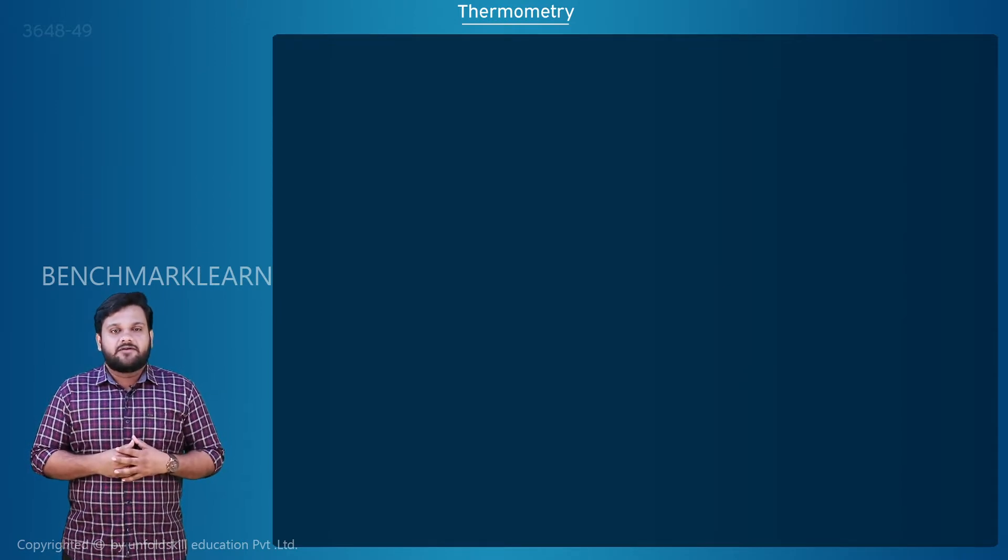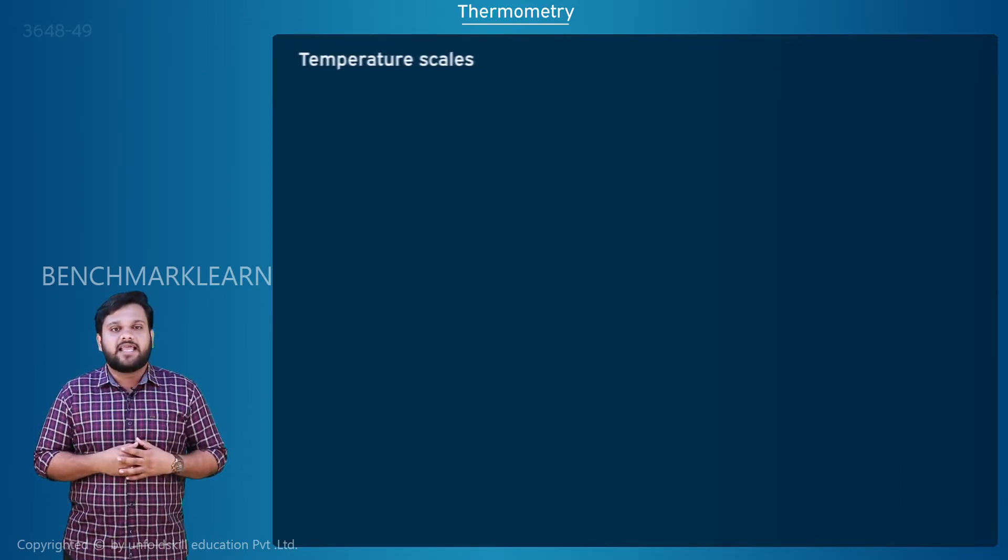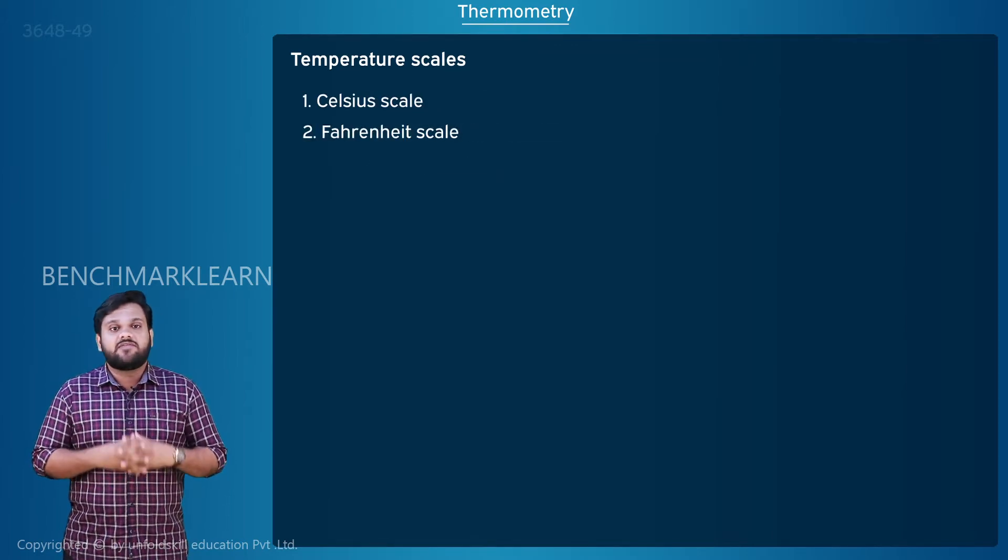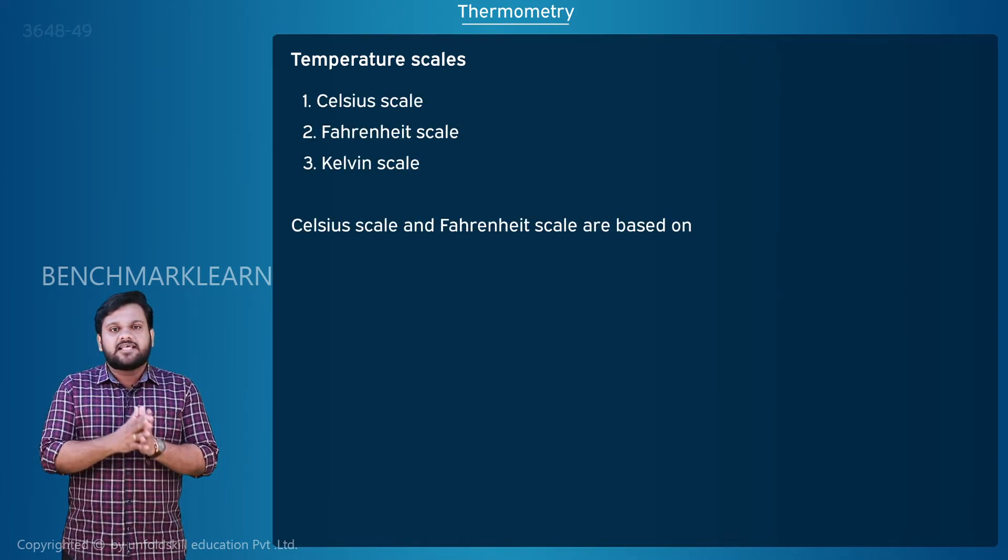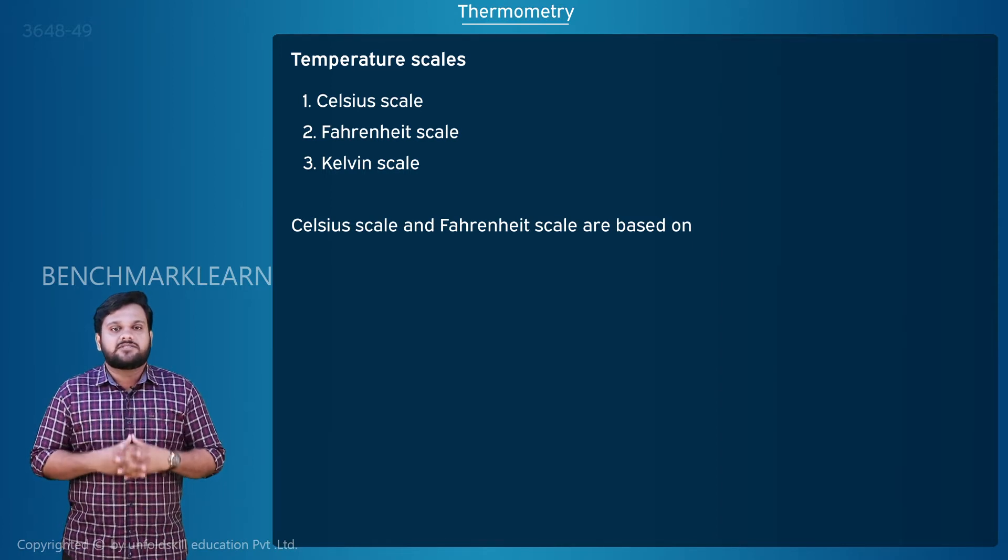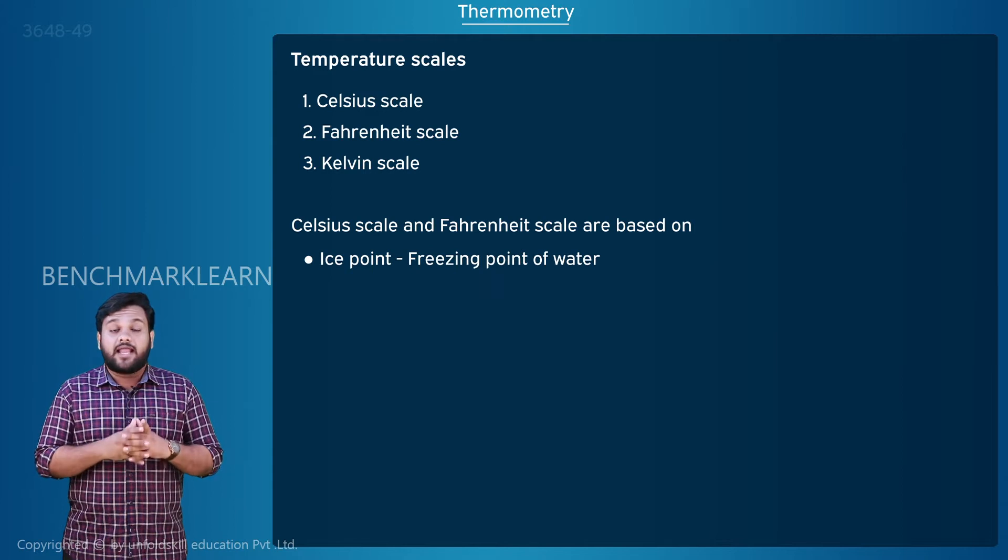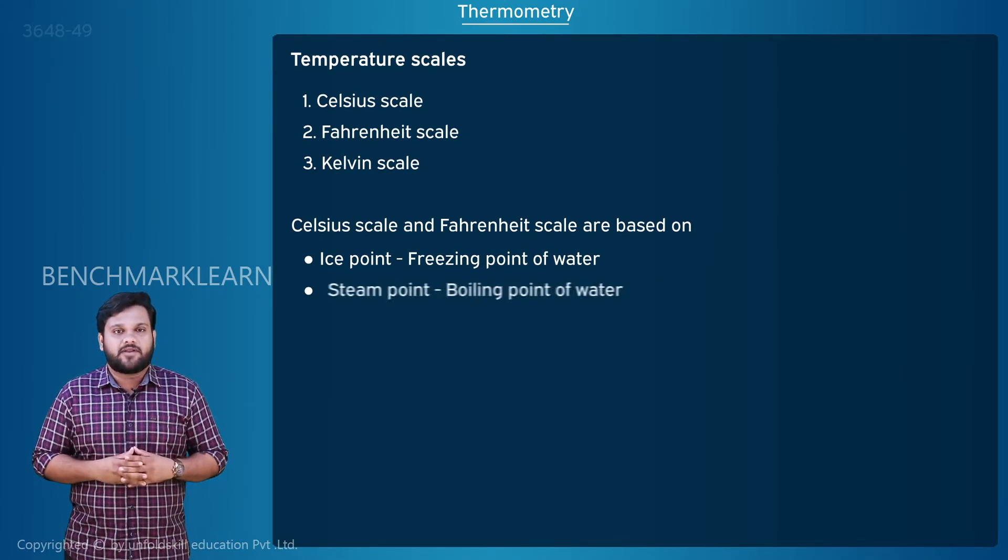Depending on the need, we can mark different temperature scales: Celsius scale, Fahrenheit scale, and Kelvin scale. Celsius and Fahrenheit scales are based on the freezing point of water, known as the ice point, and boiling point of water, known as the steam point.